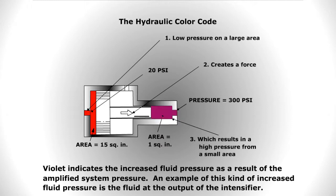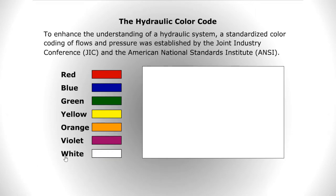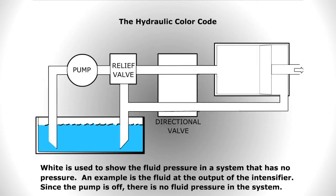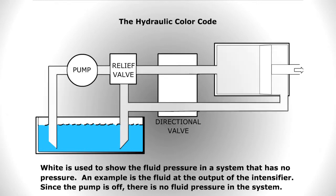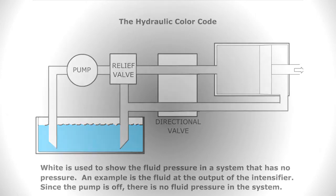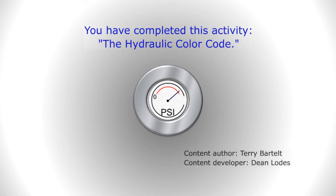An example of increased fluid pressure indicated by violet is the fluid at the output of the intensifier. White is used to show the fluid pressure in a system that has no pressure — for example, the fluid at the output of the intensifier when the pump is off and there is no fluid pressure in the system.